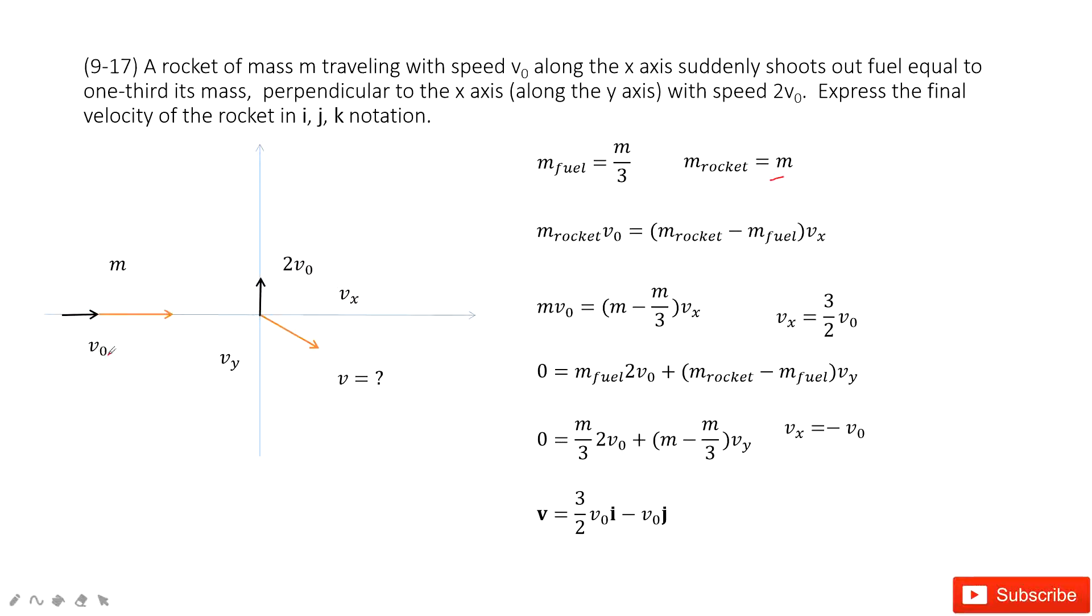And it moves with the initial velocity v0 horizontally. And then suddenly the fuel just moves to 2v0, vertical up.